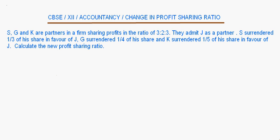Let's do some questions on change in profit sharing ratio. We'll do a question on the calculation of the new profit sharing ratio. S, G and K are partners in a firm sharing profits in the ratio of 3:2:3. They admit J as a new partner. S surrenders 1/3rd of his share, G surrenders 1/4th of his share, and K surrenders 1/5th of his share in favor of J. We have to calculate the new profit sharing ratio.